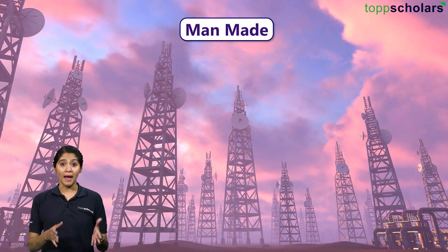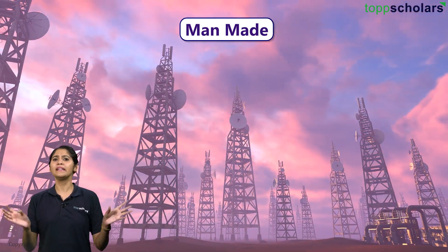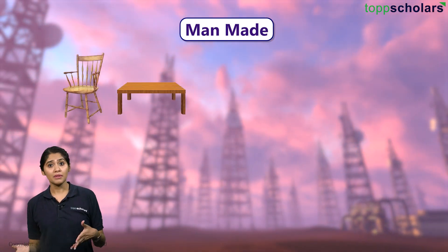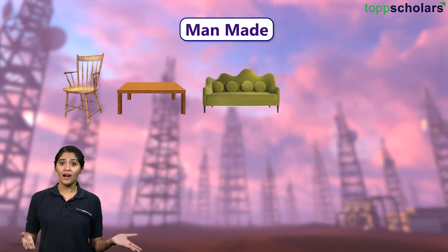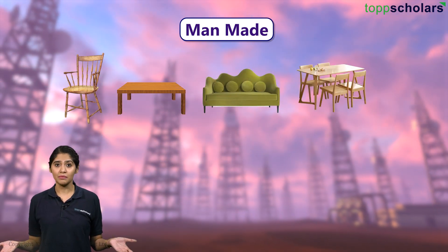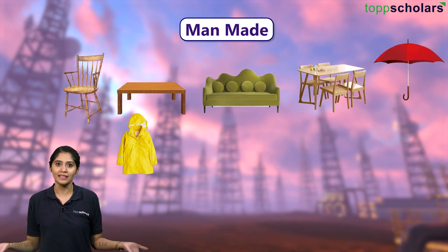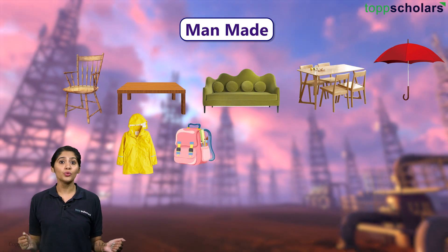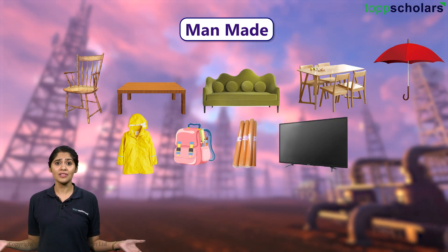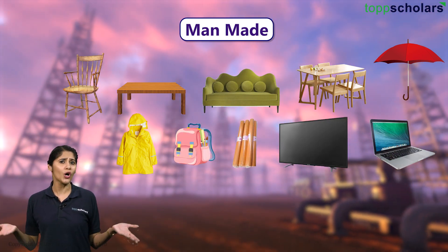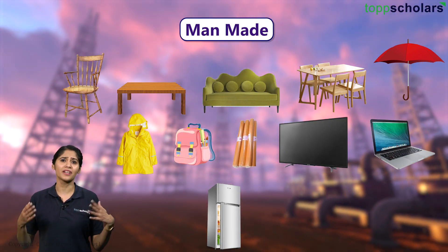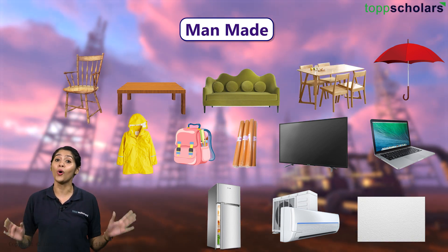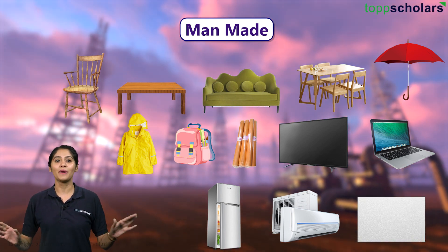For man-made things, we have plenty around us — from this chair to table, sofa, dining table, umbrella since it's raining these days, raincoat, your school bags, book covers, television sets, laptops, refrigerator, air conditioner, thermocol and so on are all made by humans.